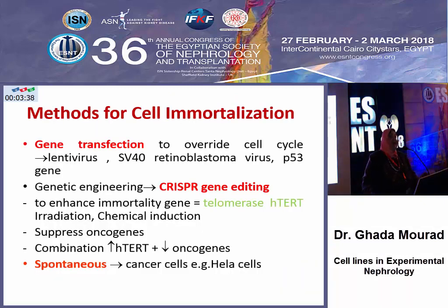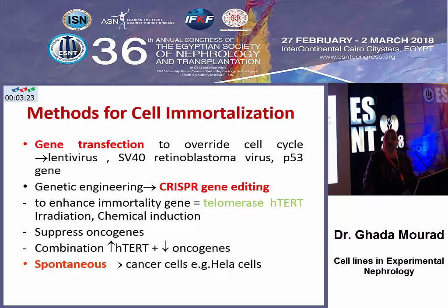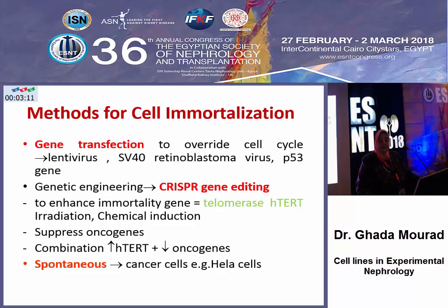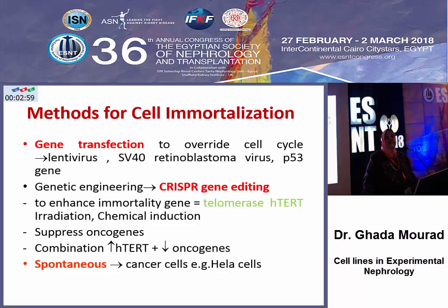There are several methods for immortalization. The initial methods included gene transfection with viruses. Then came the era of enhancement of the telomere using radiation or chemical agents, until today we have the era of genetic editing with CRISPR methodologies, which allows enhancement of telomeres and suppression of oncogenes. It is also important to remember that immortalization happens spontaneously in some cell lines, especially in cancer cell lines.